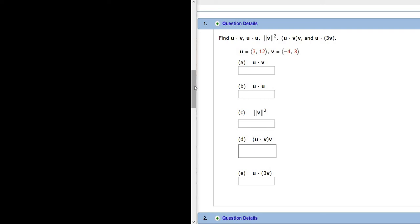In this problem, we're going to compute various operations with dot products. So our first vector here is u, and it's given by 3, 12 in component form.